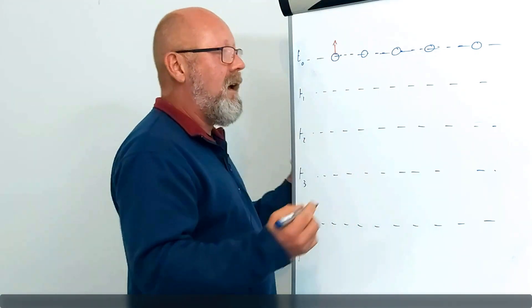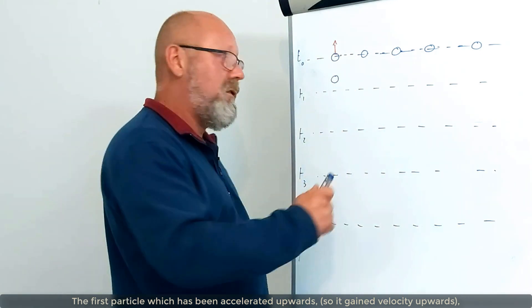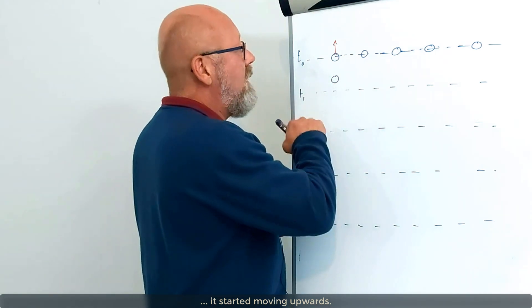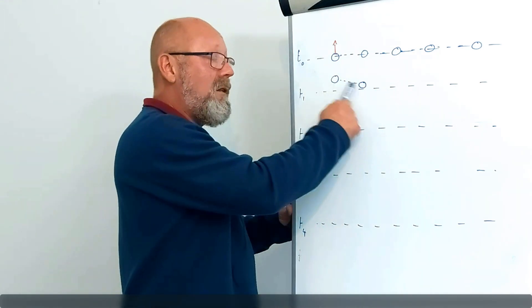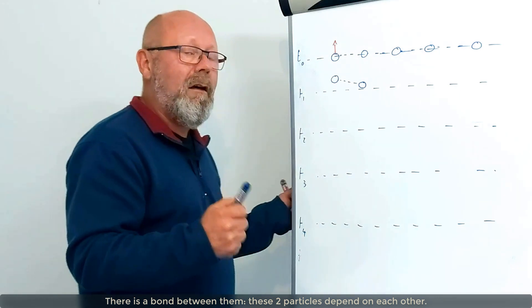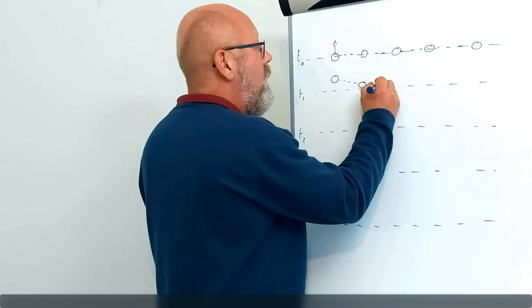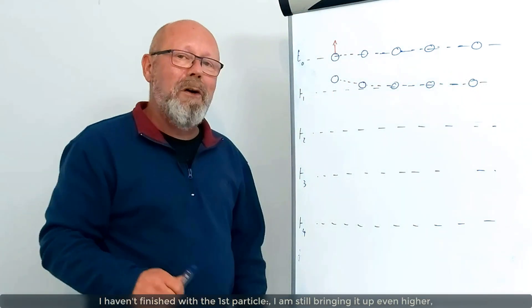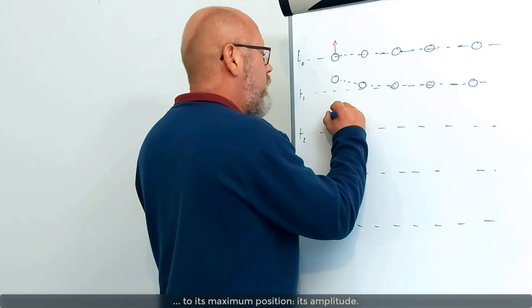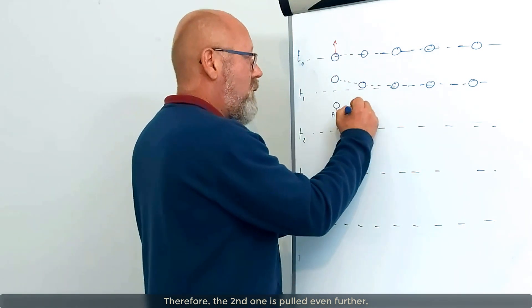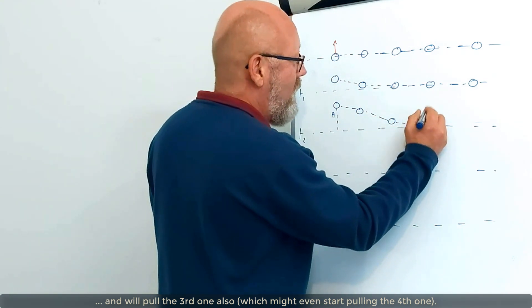So, what happens after some time? I've got the first particle which has been accelerated upwards, so it gained velocity upwards, so it started moving upwards. And because it is upwards compared to the equilibrium position, it started to pull the second one. There is a bond between them. These two particles depend on each other. If one moves, the other one will feel a motion too. It will feel a force too. I haven't finished with the first particle. I'm still bringing it up even higher to its maximum position, its amplitude. Therefore, this one is pulled even more, and will pull the other one also, which might even start pulling the fourth one.